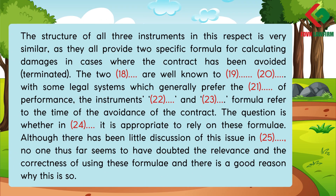The structure of all three instruments in this respect is very similar, as they all provide two specific formulae for calculating damages in cases where the contract has been avoided or terminated. The two formulae are well known to domestic legal systems. In contrast with some legal systems which generally prefer the due date of performance, the instruments' concrete and abstract formulae refer to the time of the avoidance of the contract.